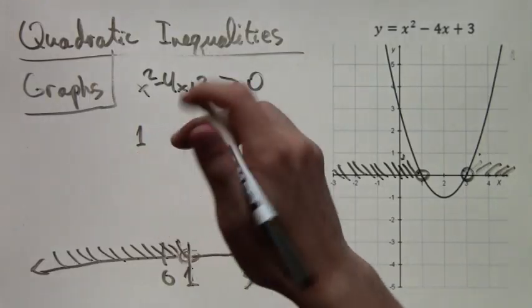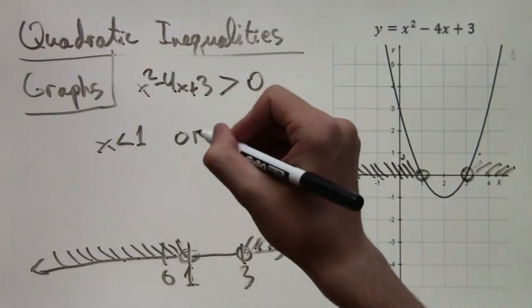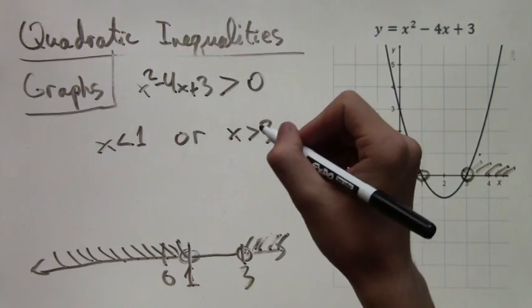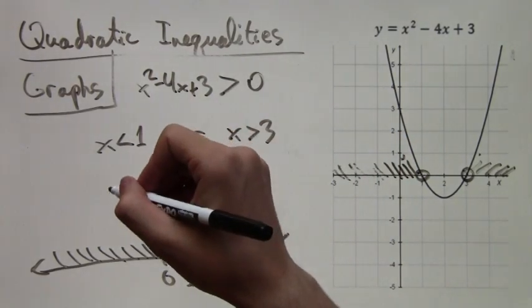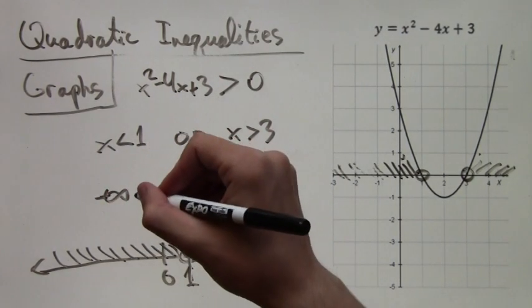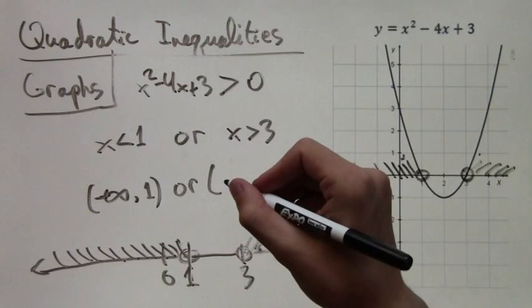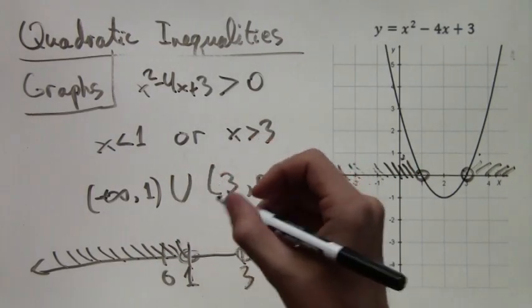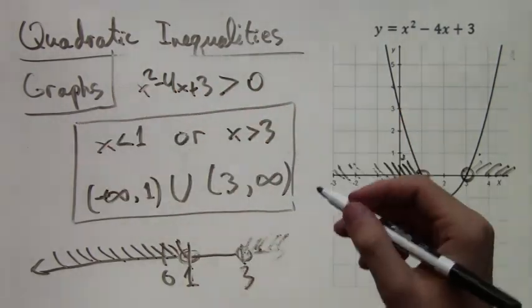Written down, we could have x less than 1 or x greater than 3, because either one works. And written in interval notation, this would be negative infinity comma 1 with parentheses or 3 comma infinity with parentheses. But in interval notation we use, instead of the word OR, the union symbol, which looks like a capital U.